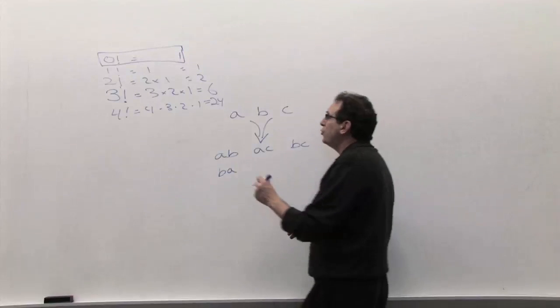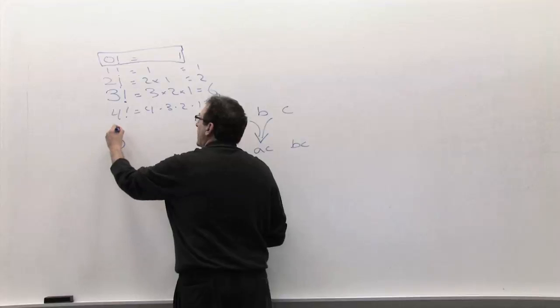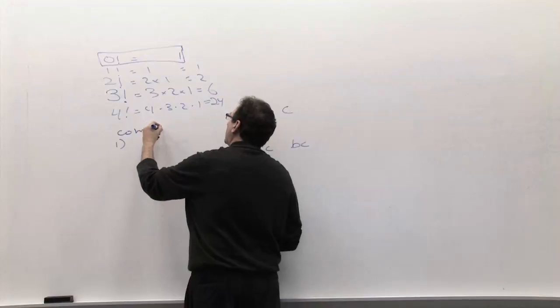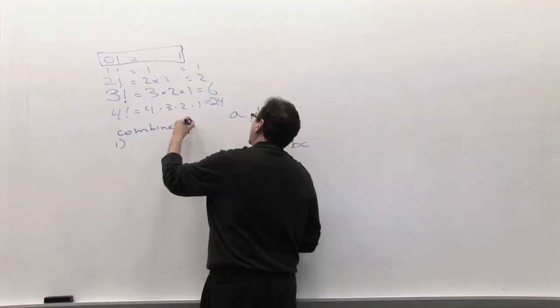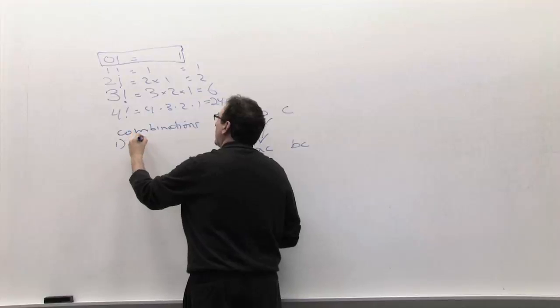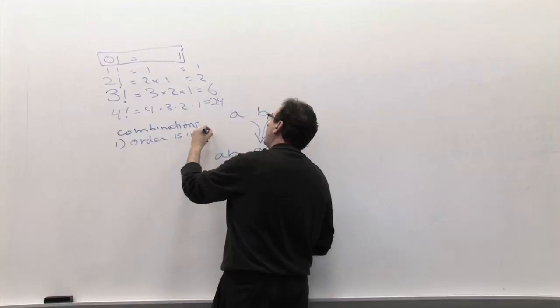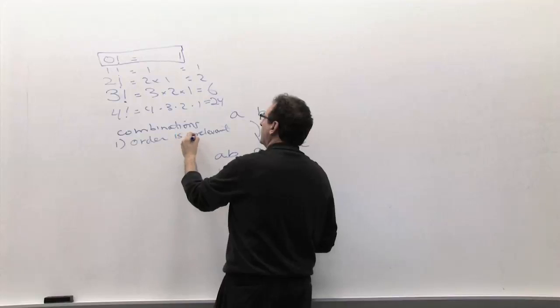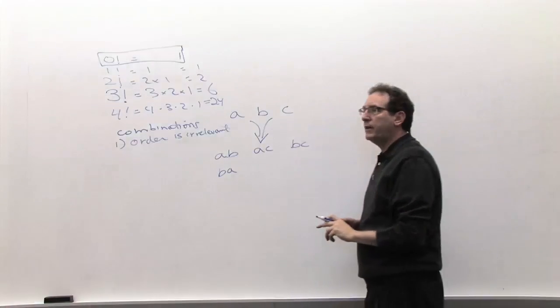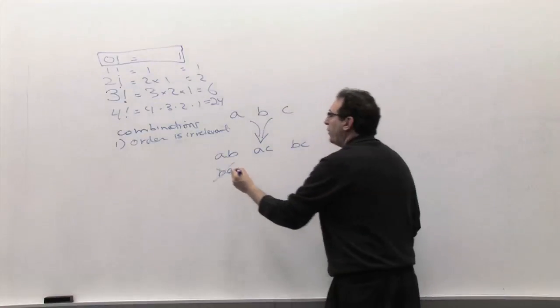So, we're going to assume in our calculations right now, what's called combinations, is the order is irrelevant. A, B, and B, A. So, if the order is irrelevant, if the order is irrelevant, then we only have three of them.